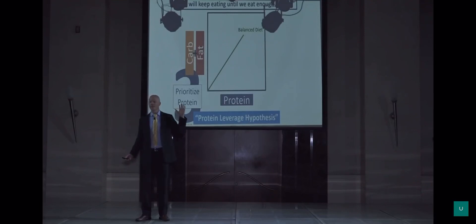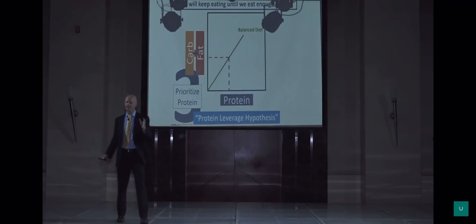And here's an example of what a balanced diet looks like. We're eating a certain amount of carbohydrate and fat, and it's matched to a certain amount of protein.